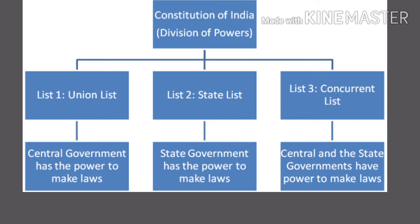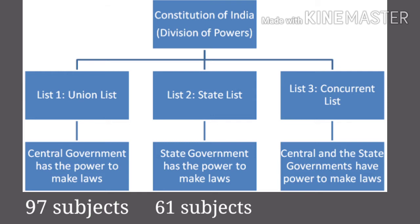Under List 1, that is the Union List, the powers of the Union Government are mentioned. It contains 97 subjects. Under the second list, that is the State List, 61 subjects are mentioned on which the State Legislatures can enact laws.